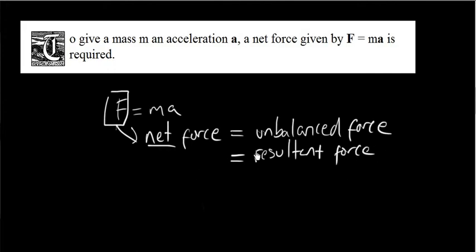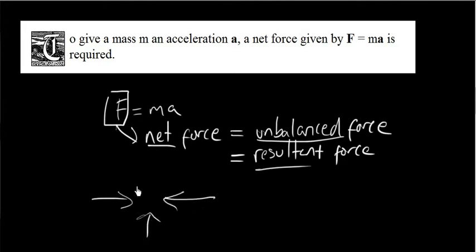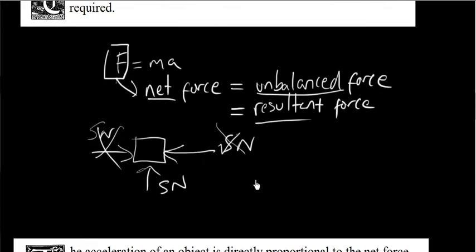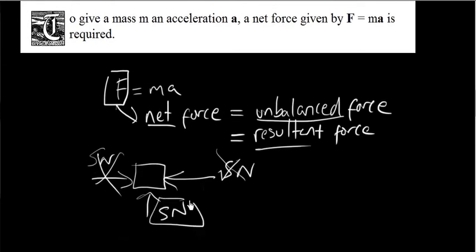Net, unbalanced, and resultant all mean the same thing. When you have several forces acting on an object, what matters is the leftover force. For example, if you have 5 newtons on one side and 5 newtons on the other, they cancel out and cause no acceleration. But if there's a 5-newton force with nothing to balance it, the block will accelerate in that direction — and depending on the mass, you know the acceleration.